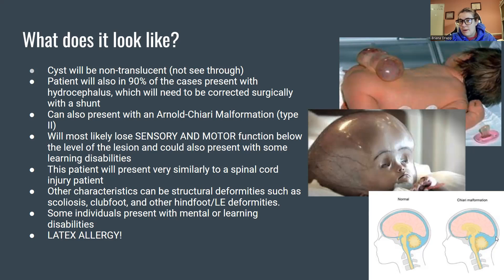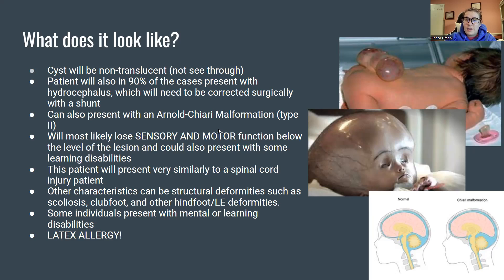Patients may also present with an Arnold Chiari malformation, where part of the brain protrudes down into the spinal cord. It's usually type two. This is more common than people think. It's associated with myelomeningocele because the hydrocephalus causes the brain to swell and push down into the spinal cord — you can see how it's all connected.